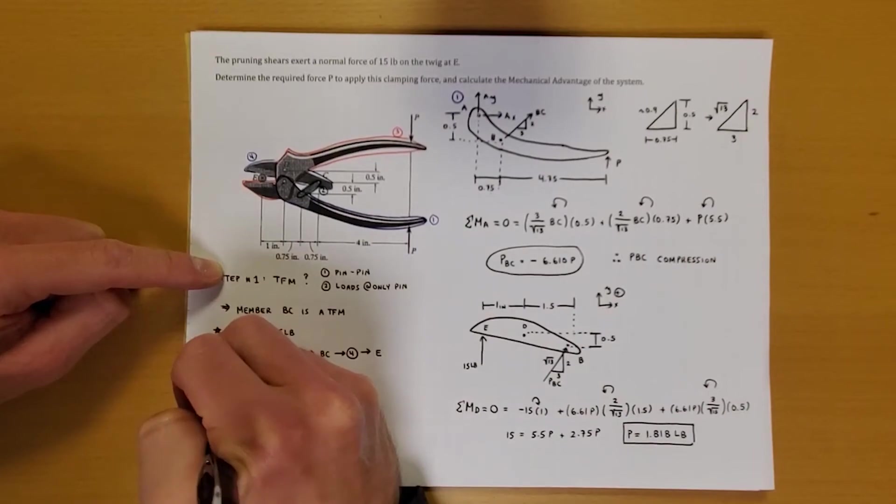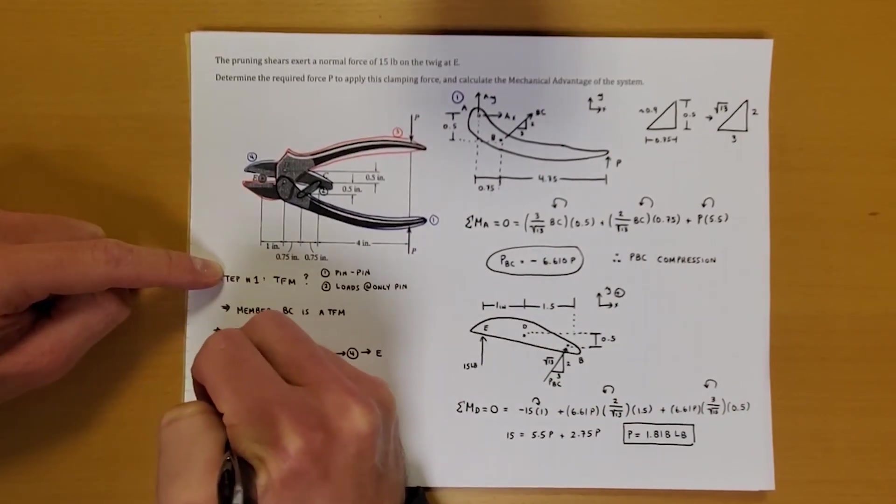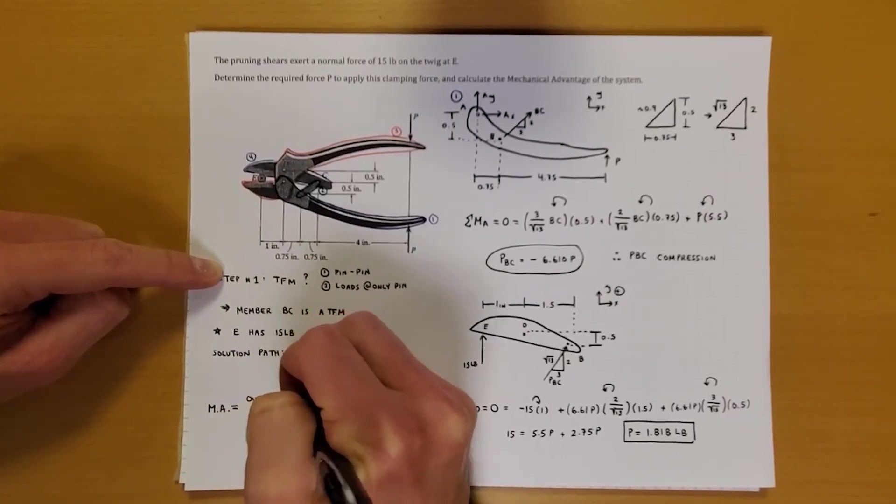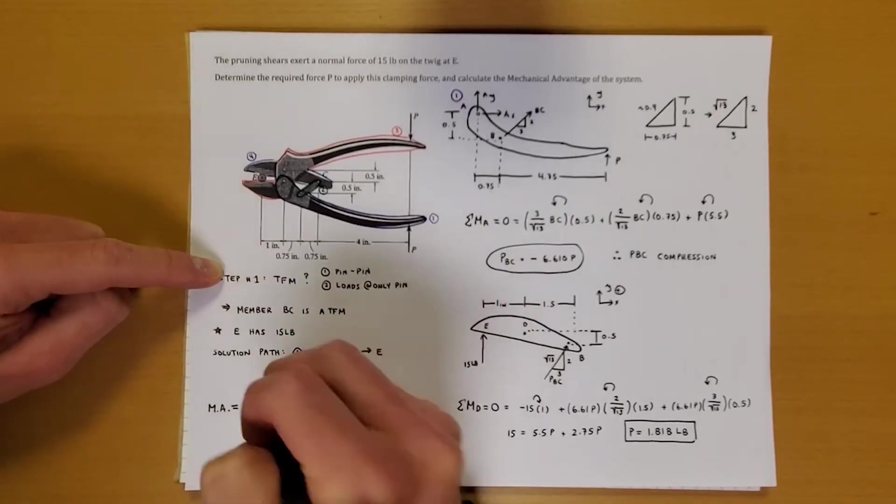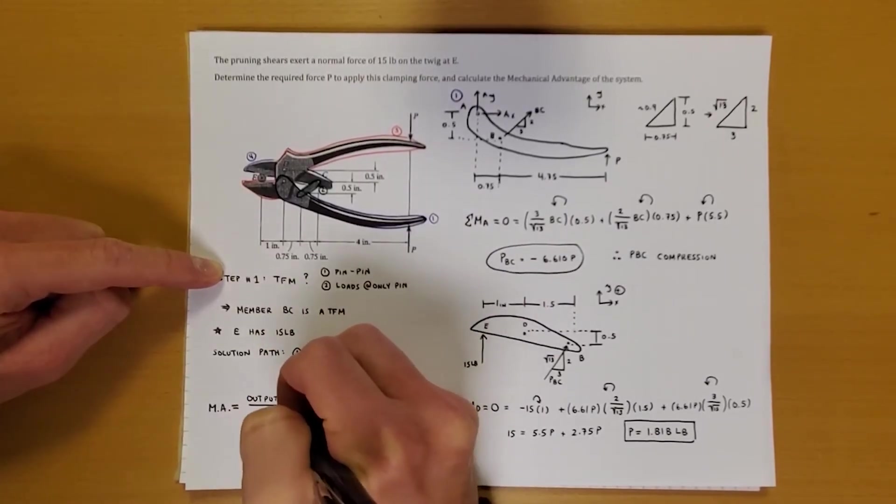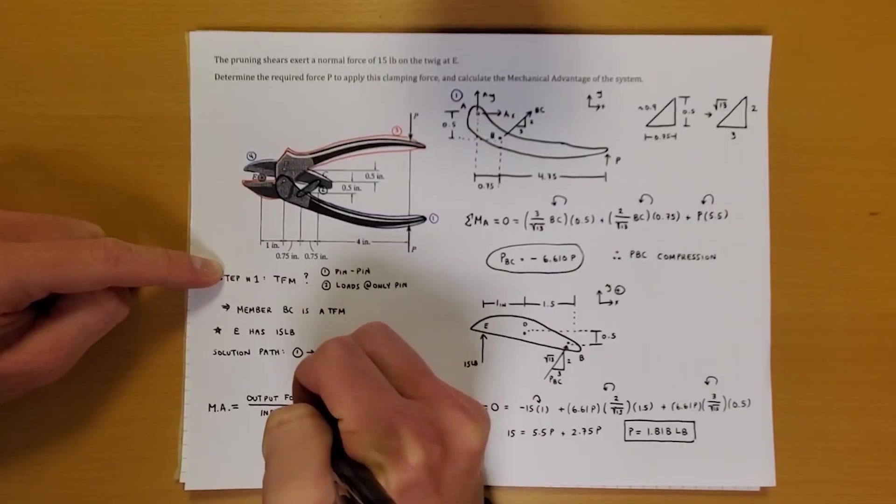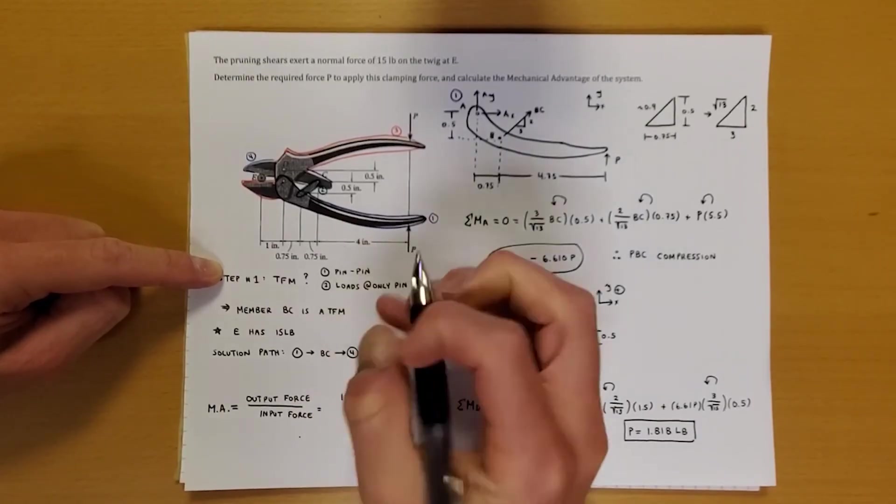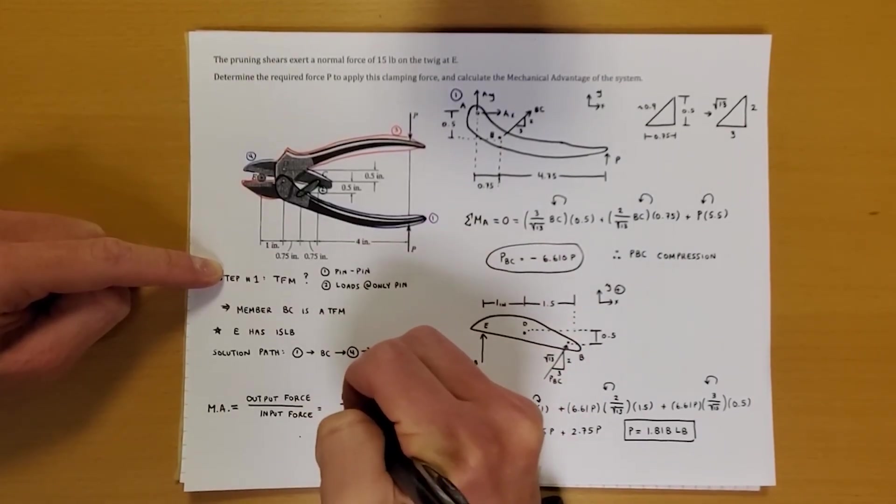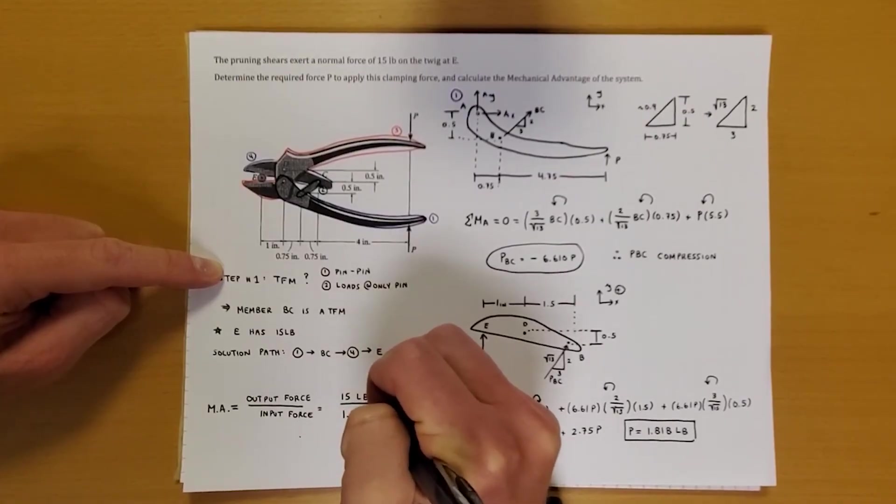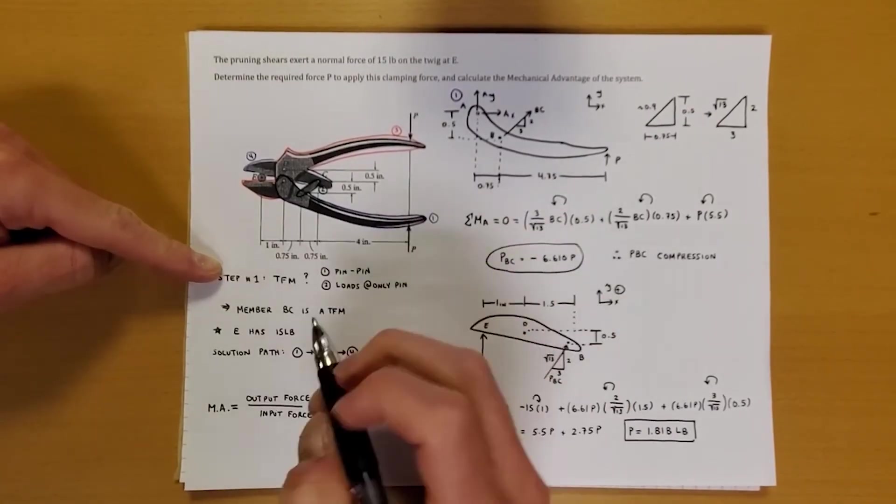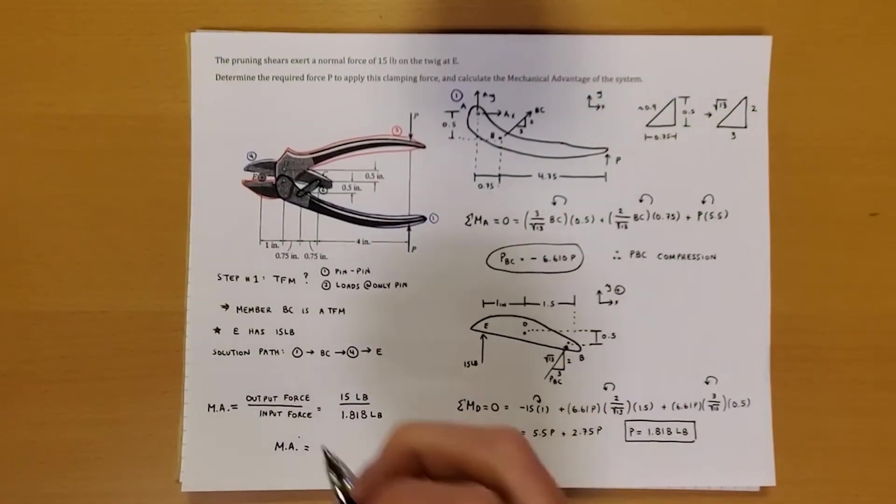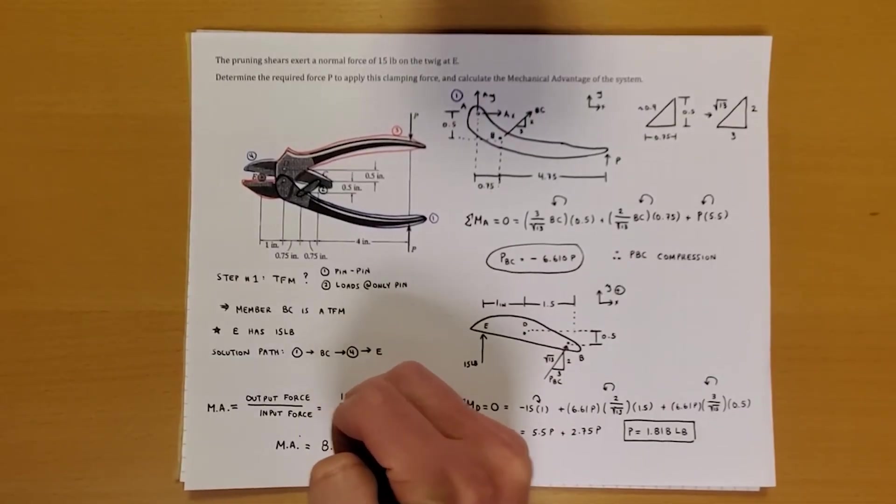The last thing that we needed to compute was the mechanical advantage of the system. Mechanical advantage, remember, is the output force over the input force. So in this particular case, our mechanical advantage is going to be we're outputting 15 pounds at the cutting face of the shear. And we're putting in 1.818 pounds. Therefore, our mechanical advantage is 8.25.